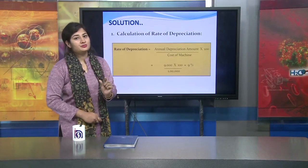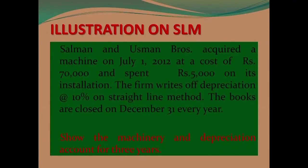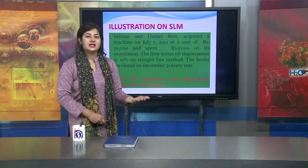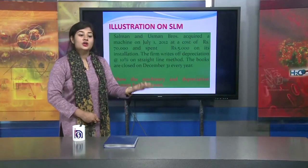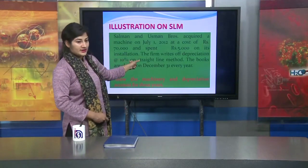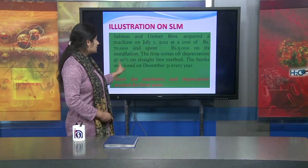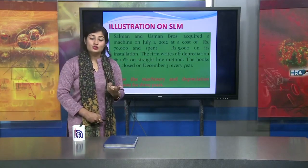Next illustration: Salman and Usman Bros acquired a machine on 1st July 2012 worth 70,000 rupees. They also spent 5,000 on installation, which will be included in the cost. The firm writes off depreciation at 10 percent per annum using the Straight Line Method. Whether to use SLM or WDV method will always be mentioned in the question.